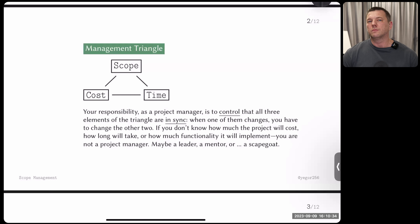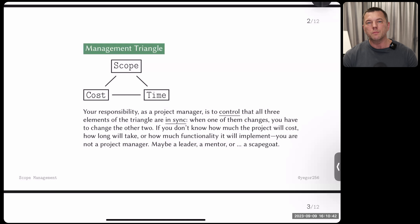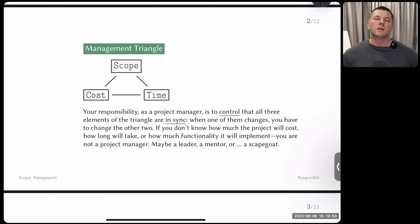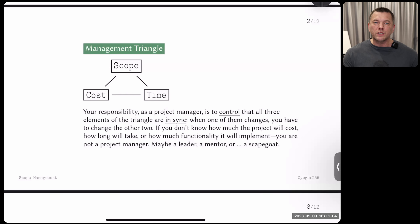I introduced the management triangle — three components which you as a project manager must keep in sync. You must always guarantee to everybody involved in the project — the customer who pays the money, the programmers who work with you, and the users who will use your product — that you synchronize these three elements: scope, cost, and time.